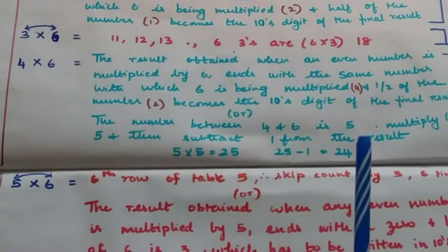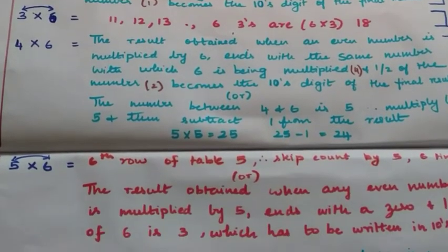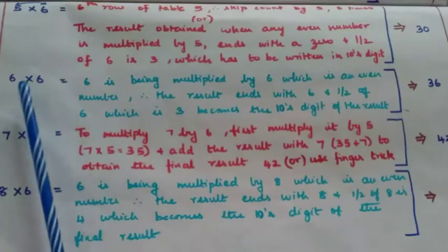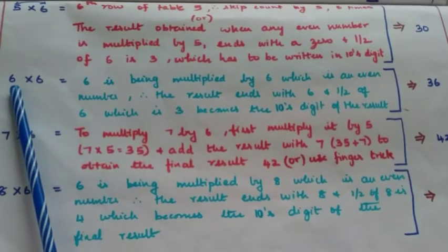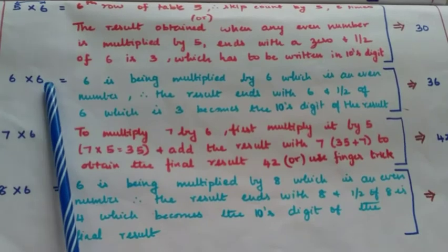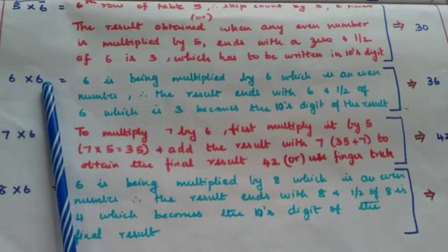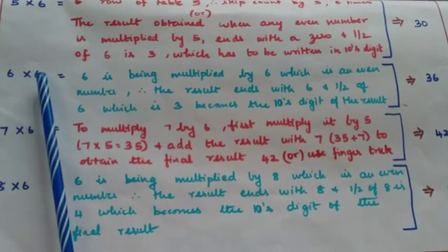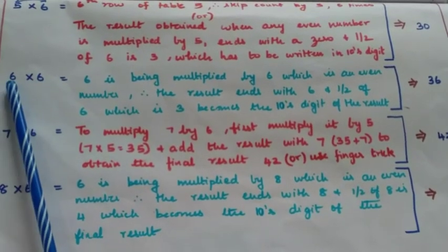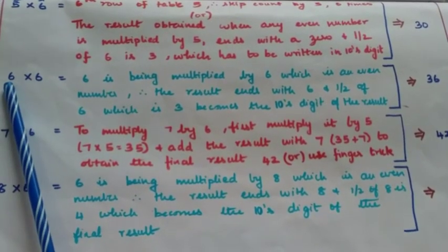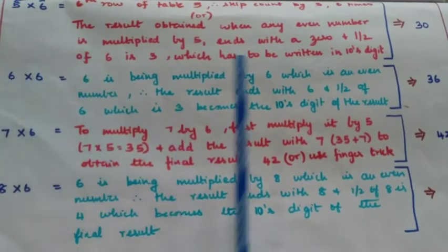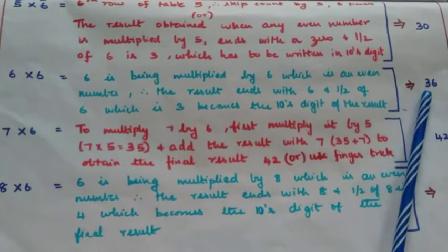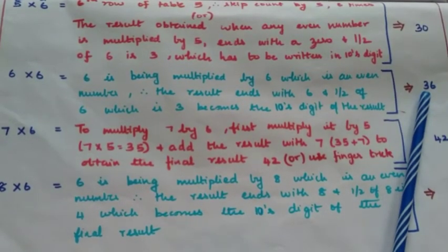For the 6th row, since 6 is an even number being multiplied by 6, the result ends with 6 and half of 6 is 3, which becomes the tens digit. Therefore 6 sixes are 36.